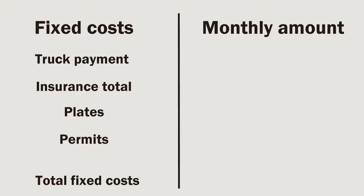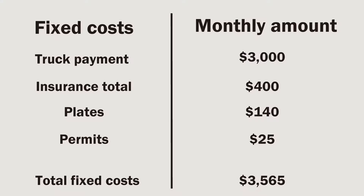Some examples of your fixed costs may include your truck payment — whether you purchased a truck or are paying a weekly lease fee — your total insurance costs, which may include occupational accident insurance, unladen non-trucking bobtail insurance, physical damage insurance, etc., as well as your plates and permits. For this demonstration, we'll say your truck payment was $3,000, insurance total was $400, plates were $140, and permits were $25 last month.